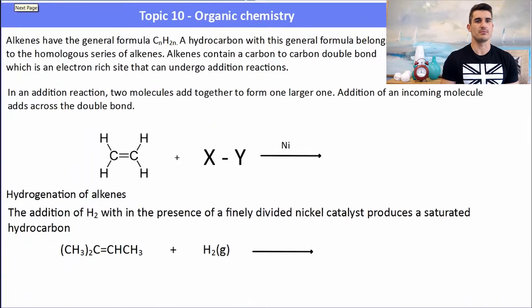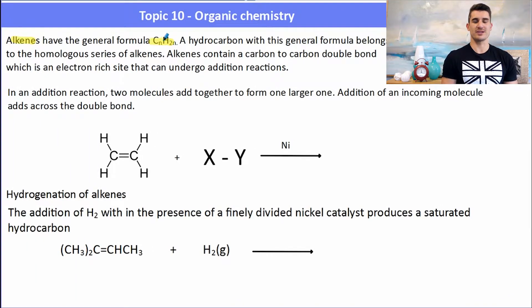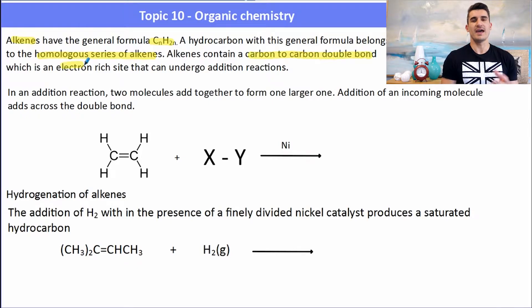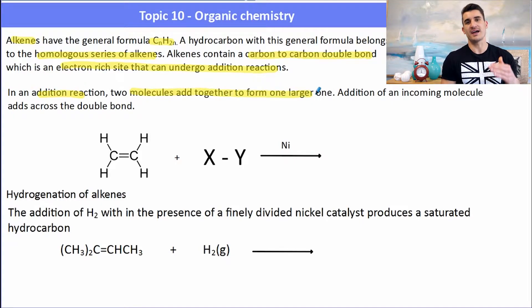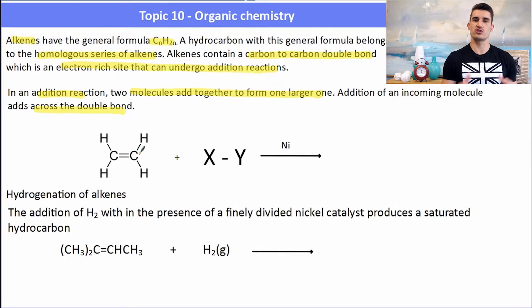Alkenes have the general formula CnH2n and belong to the homologous series of alkenes. Alkenes contain at least one carbon-to-carbon double bond. That double bond is an electron-rich site that can undergo addition reactions. In an addition reaction, two molecules add together to form one larger molecule, and the incoming molecule adds across the double bond.